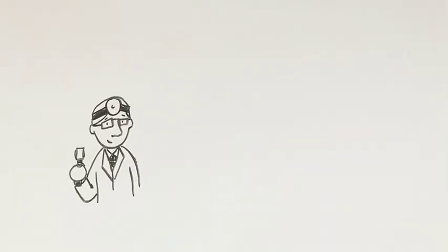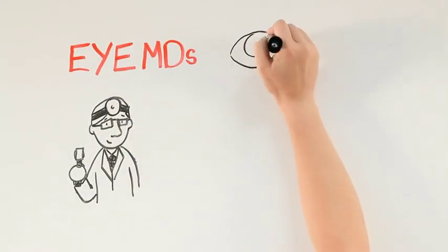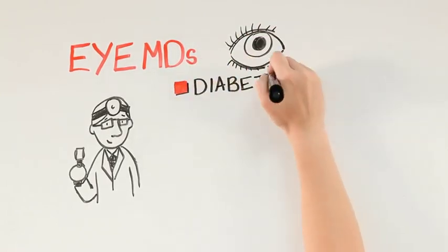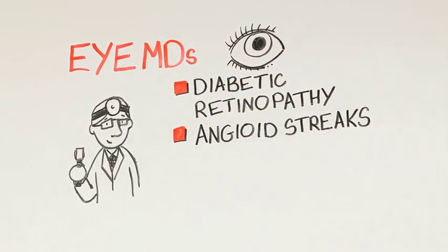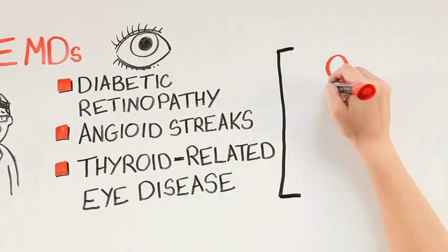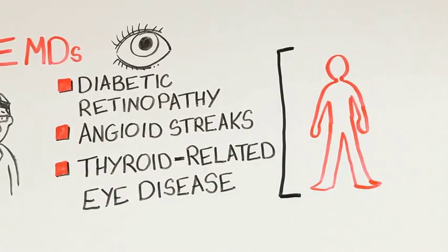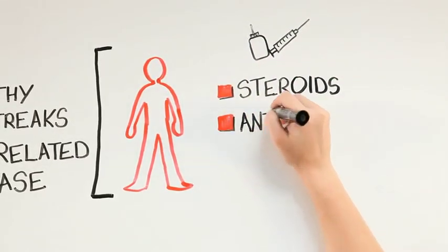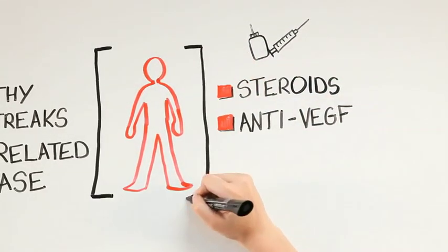Because ophthalmologists go to medical school before their residency, they are known as MDs. Having a medical degree helps an ophthalmologist because many eye conditions like diabetic retinopathy, angioid streaks, and thyroid-related eye disease are linked to problems that affect the whole body. Additionally, we use medications like steroids and anti-VEGF treatments that can affect the rest of the body.